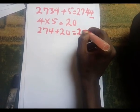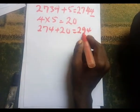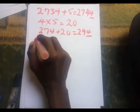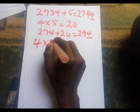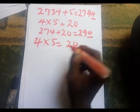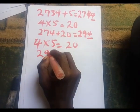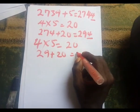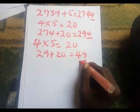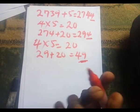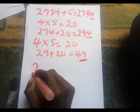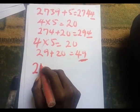We have 274 plus 20, which equals 294. The last digit is four, so four times five gives twenty. Adding twenty to 29 gives 49. We know that 49 is divisible by seven because 7 times 7 is 49.